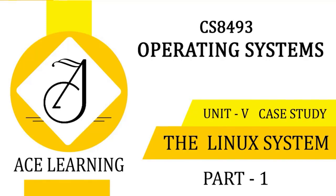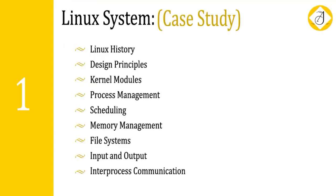Welcome to ASLearning. In this series of lectures we are going to discuss different topics related to operating systems, subject CS 8493, covered under Regulation 2017 of Anna University Chennai. In this video we are going to see about the fifth unit, which completely deals with the case study of three major operating systems. The first topics to be covered under Linux are Linux history, design principles, kernel modules, process management, scheduling, memory management, file systems, IO, and IPC.